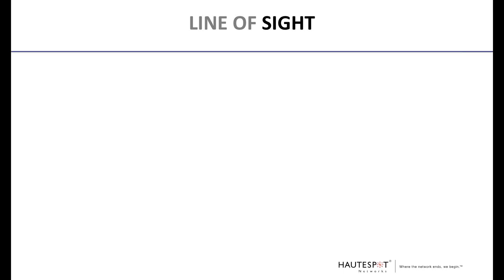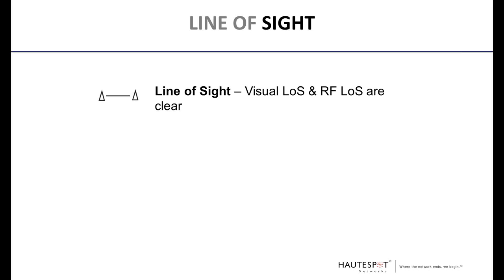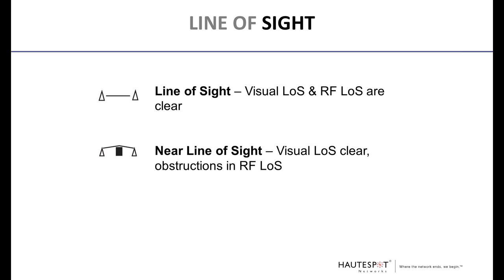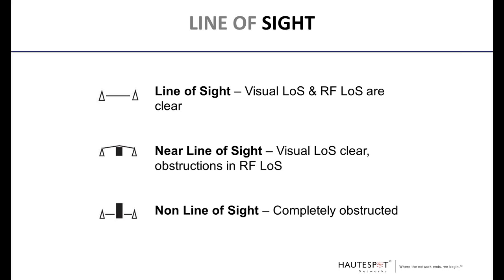For line of sight, there are three distinct levels. Line of sight means we have visual line of sight from antenna to antenna, and we have RF line of sight — meaning the Fresnel zone is clear of obstructions. Near line of sight means our visual line of sight is clear; however, we have some obstruction in the RF or Fresnel zone. Non-line of sight means both our visual and RF line of sight are completely obstructed.